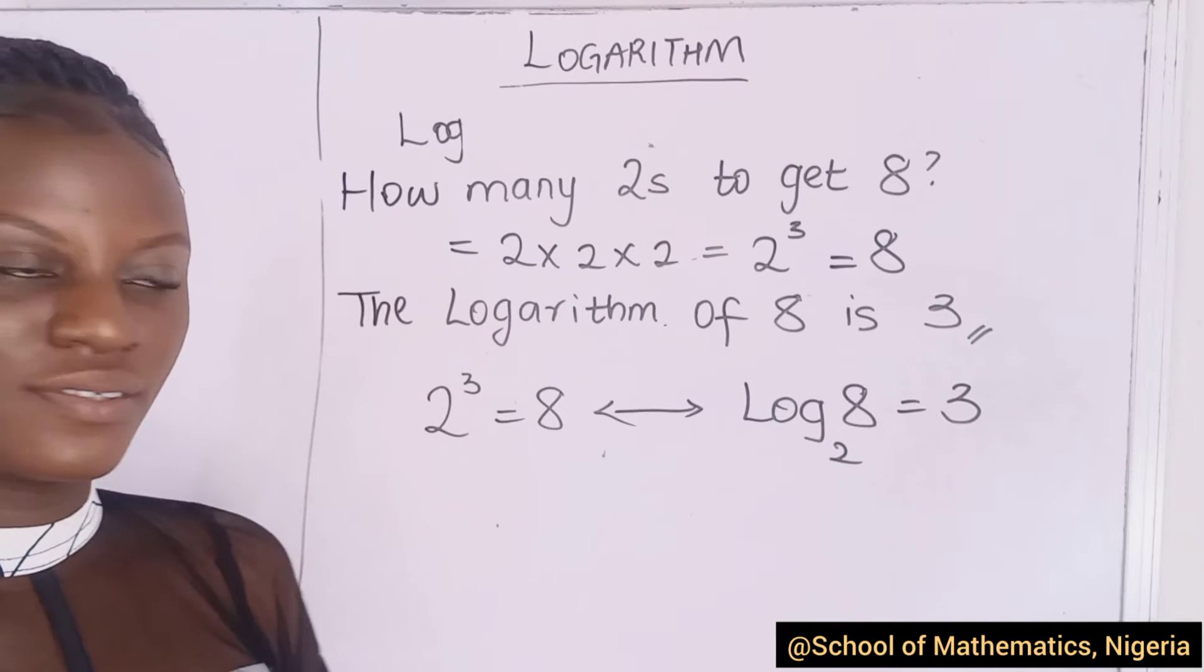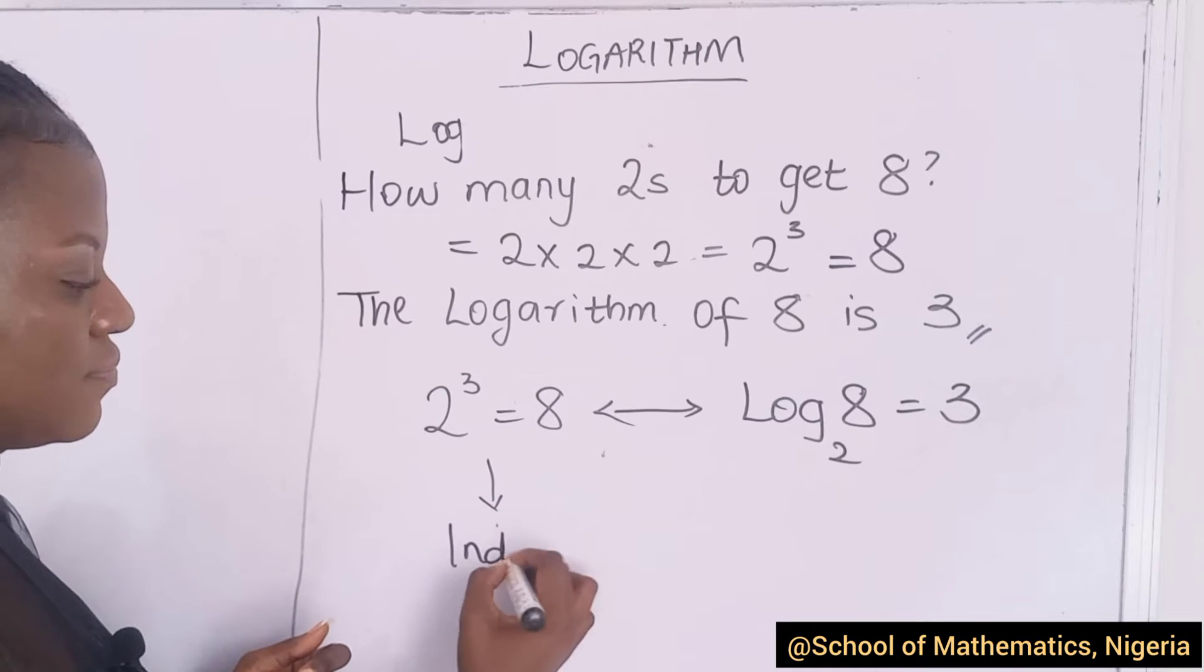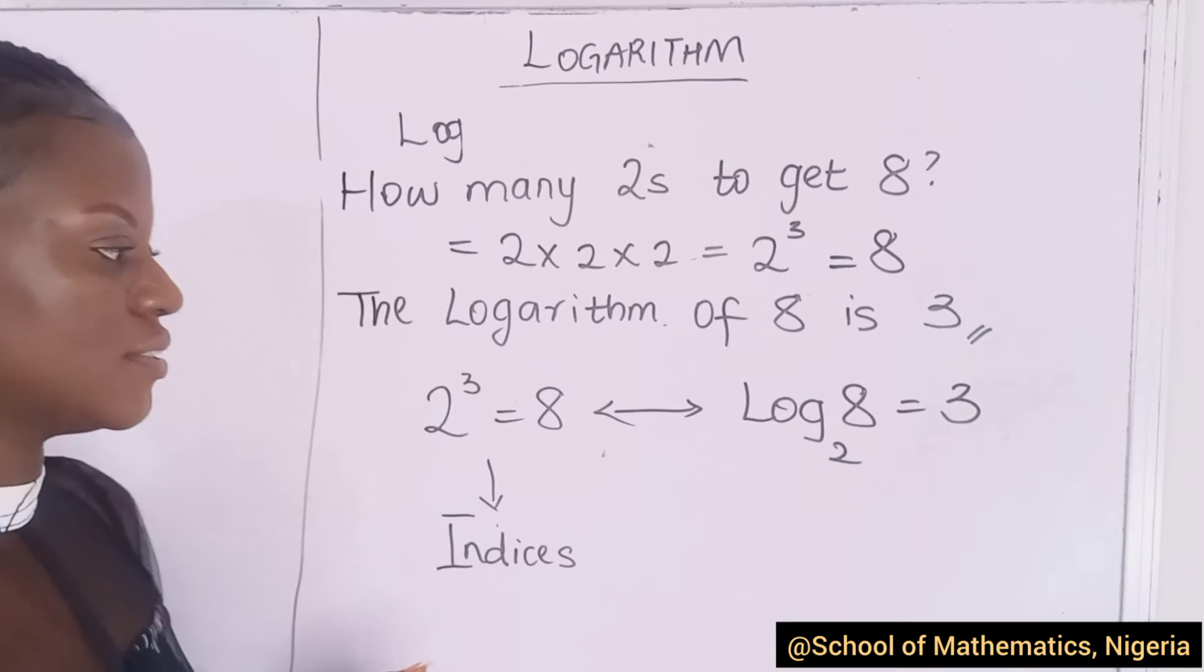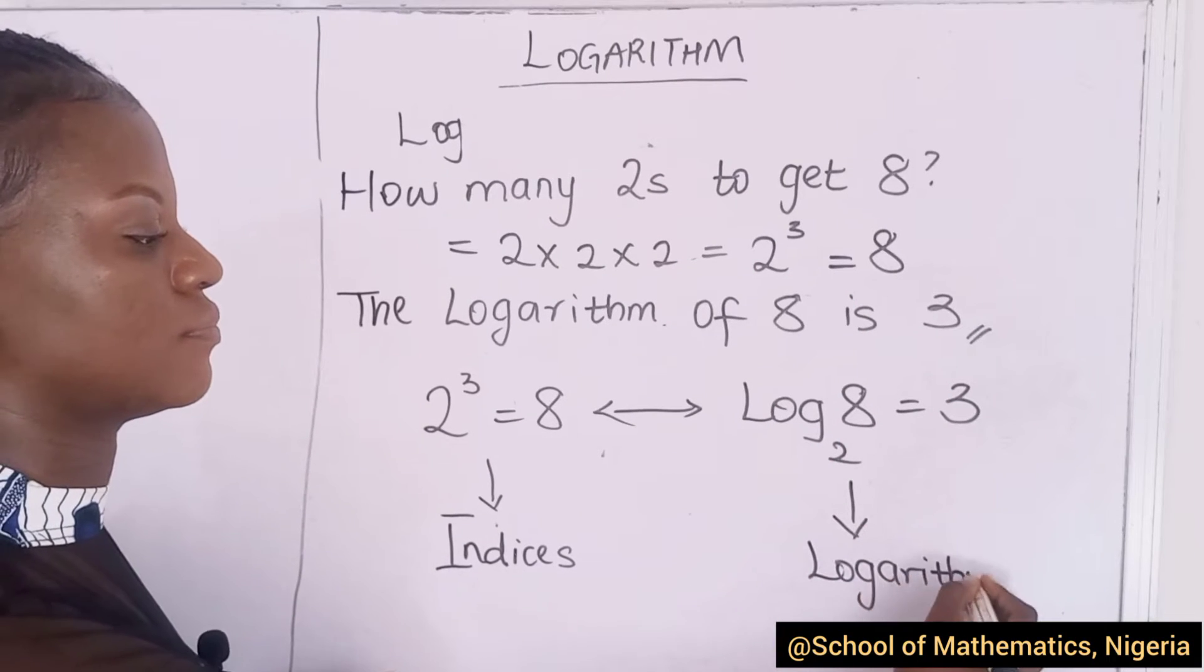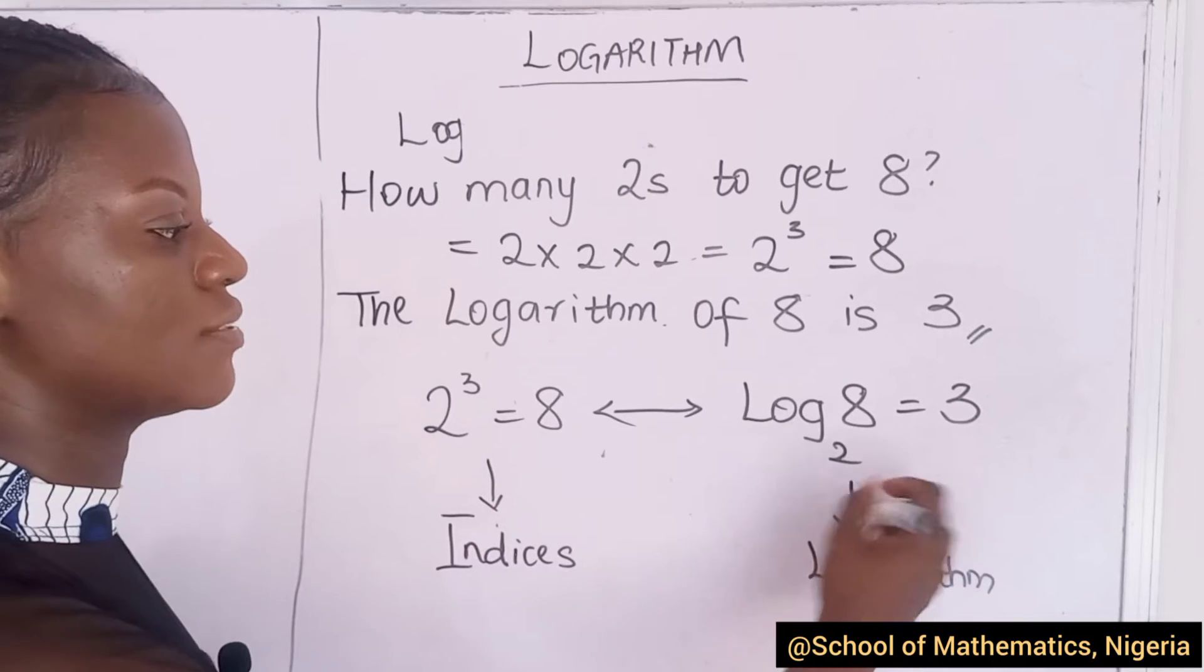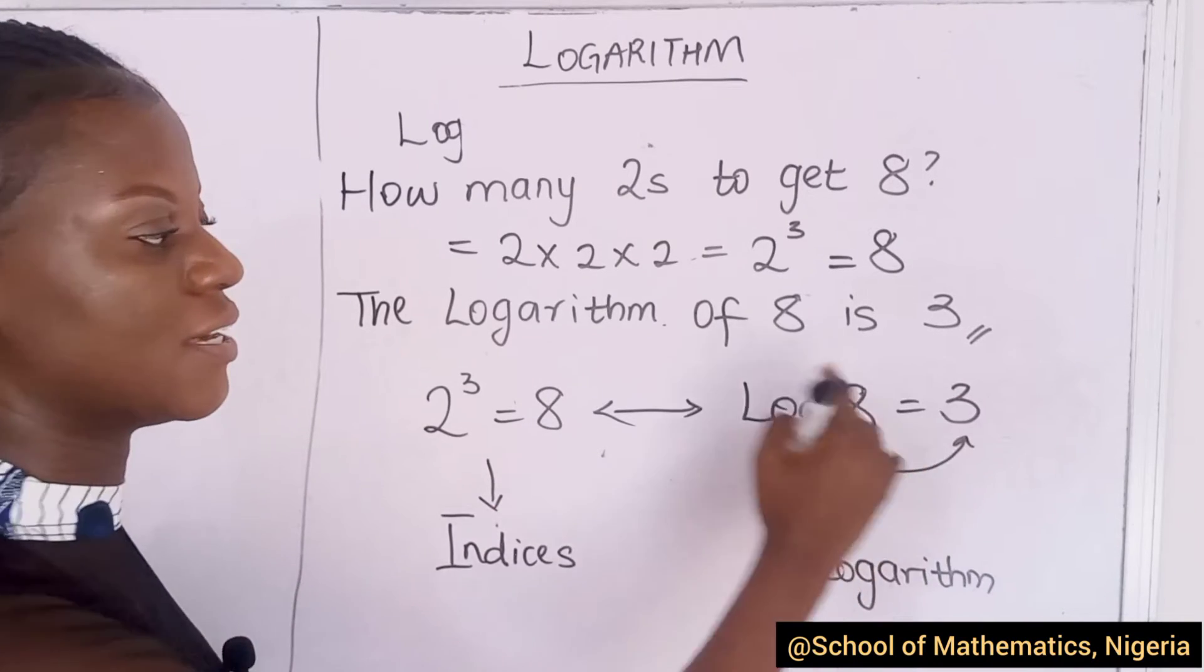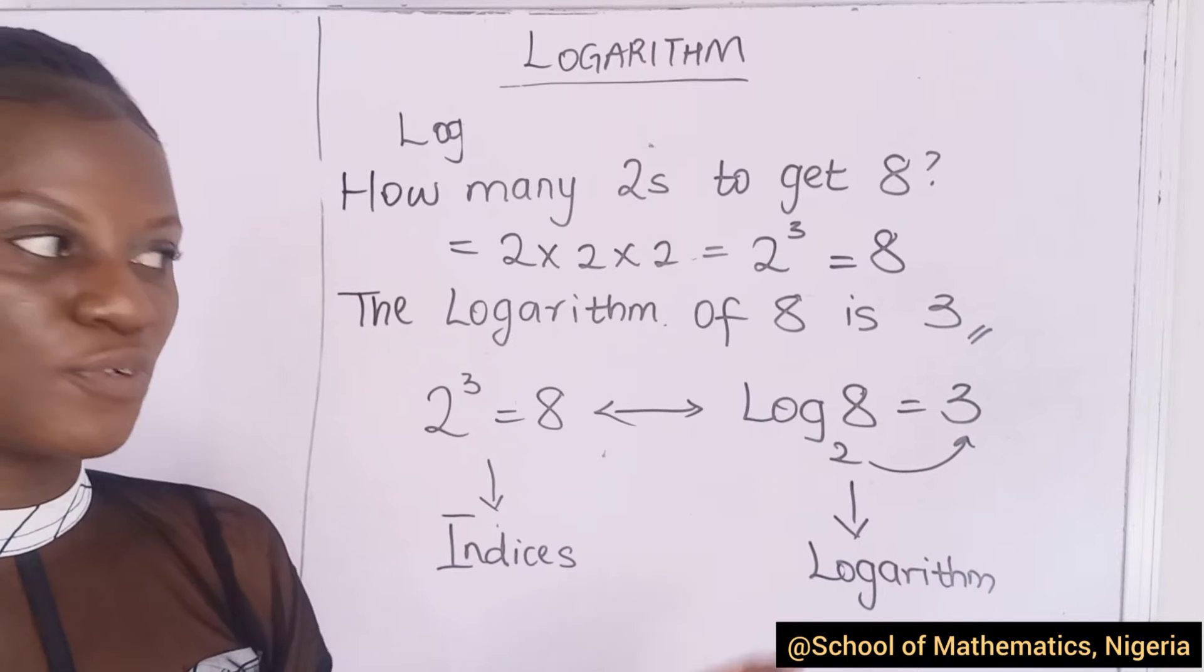What do you see? Now, do you see the connection? This is in its indices or index form. And this is in its logarithm form. Do you see a connection, or should I show you? Now, we had to raise two to the power of three to get eight.